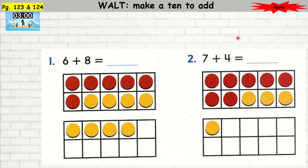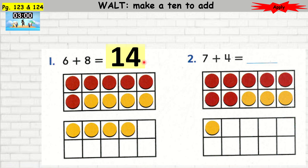I'd like you to open to page 123 and 124. We will do the activity together. So 6 plus 8 — you have 6 red and 8 yellow. So here you have 10, here you have 4. So 10 plus 4 is 14.